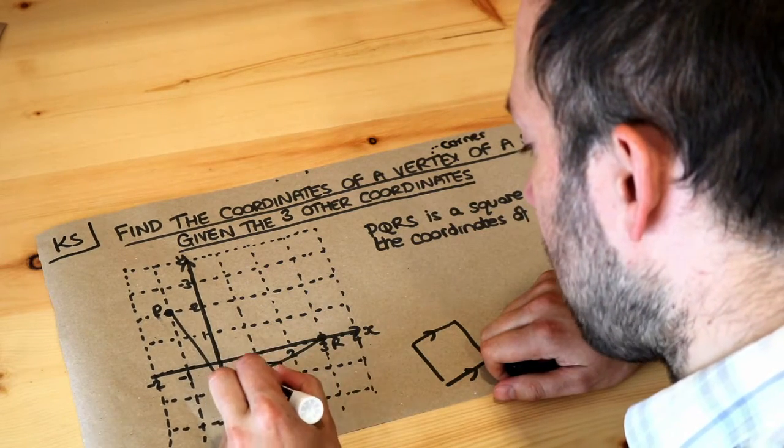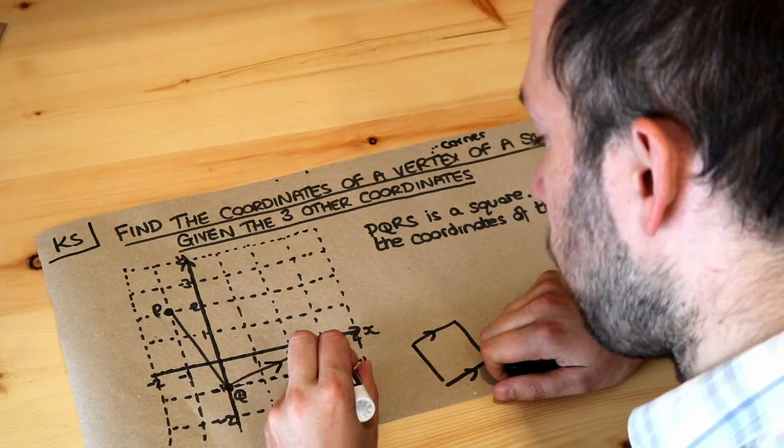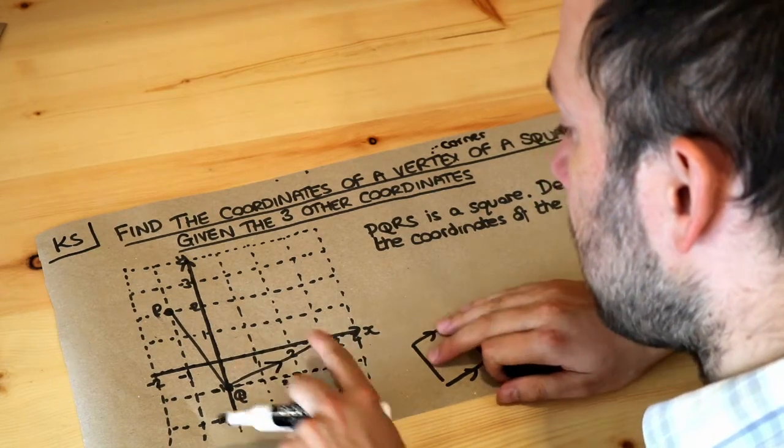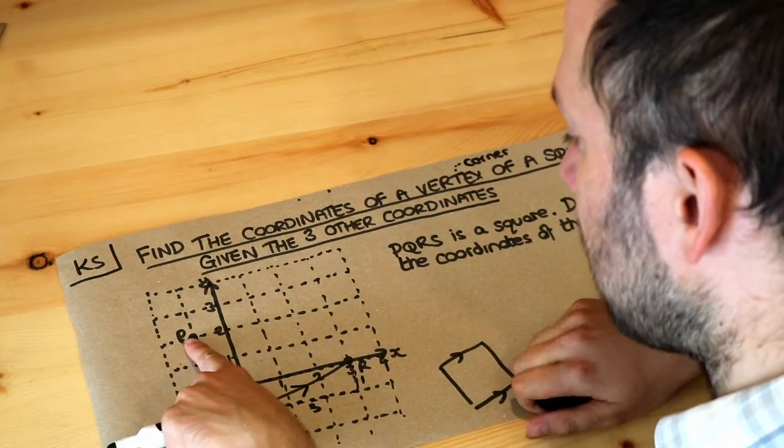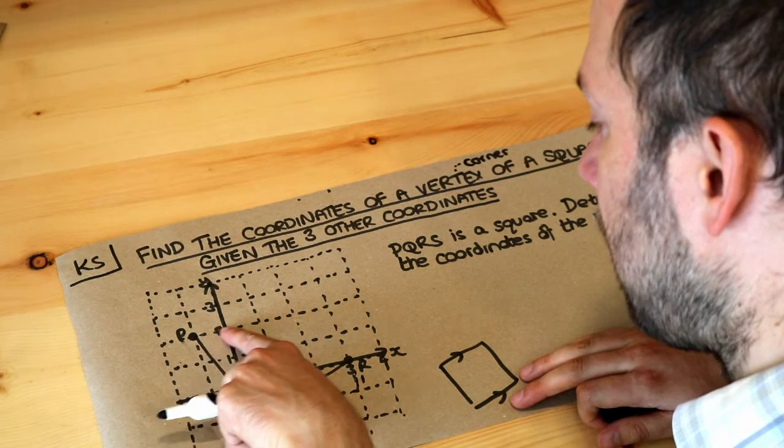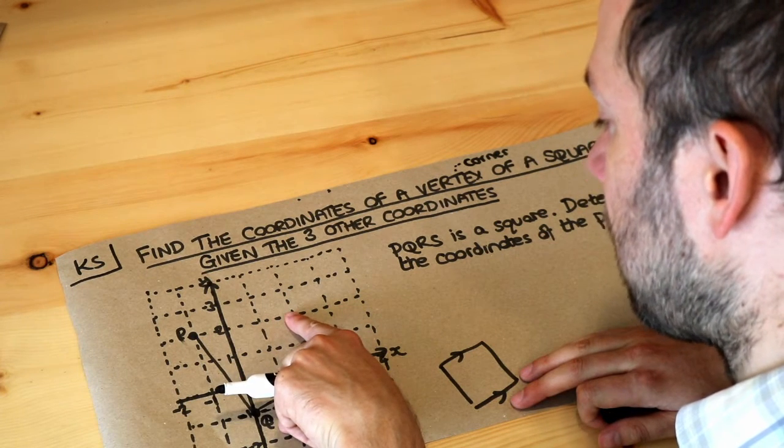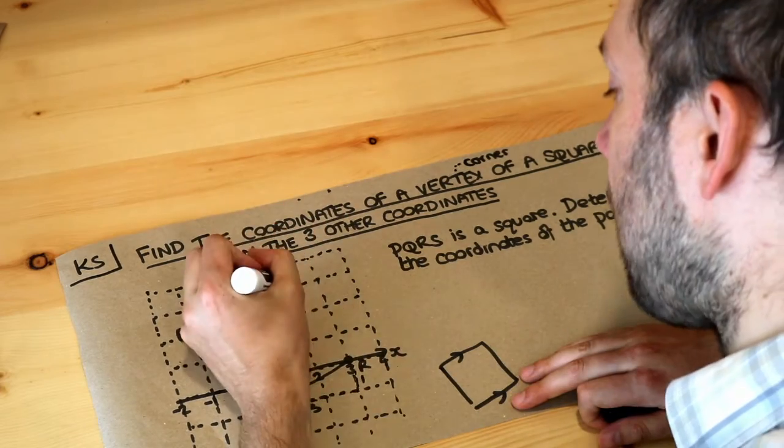We're going three squares across and one square up. So three squares across, one up. So from this point P here, we're going to do the same thing. We go three squares across, three squares to the right and one up and we get to this point.